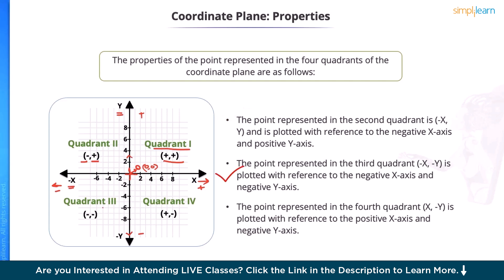The point present in the third quadrant that is negative x and negative y is plotted with reference to a negative x-axis and a negative y-axis. And the point in the fourth quadrant is presented as a positive x and a negative y value and plotted with reference to a positive x-axis and a negative y-axis.